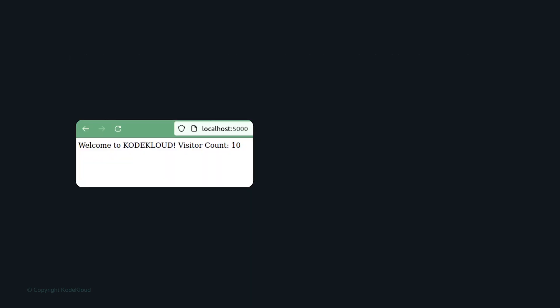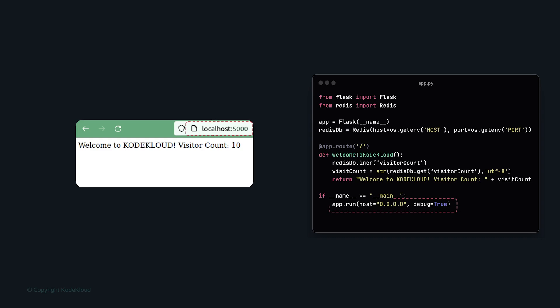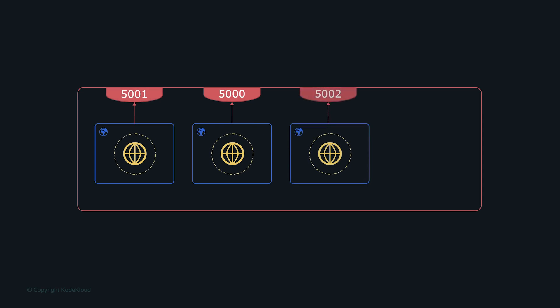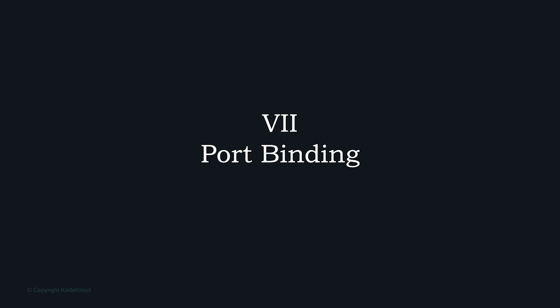Factor seven is port binding. Accessing the Flask app is as simple as typing the URL and port number — port 5000 by default. Running multiple instances on the same server means binding to different ports such as 5001 or 5002. Other services have similar port bindings — Redis listens on port 6379. The app exports HTTP as a service by binding to a specific port and listening for incoming requests. Unlike traditional web applications, a 12-factor app is completely self-contained and does not rely on a specific web server.